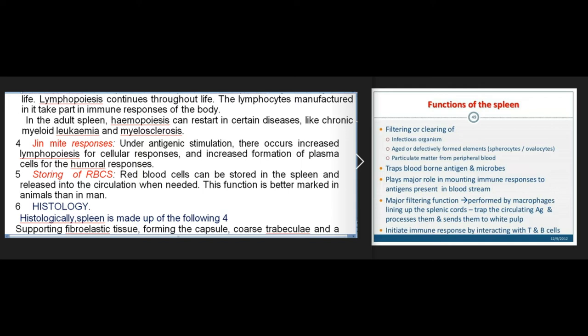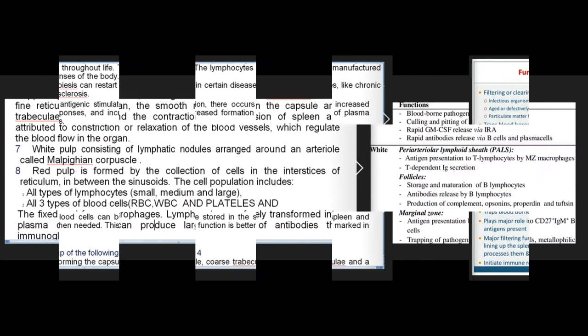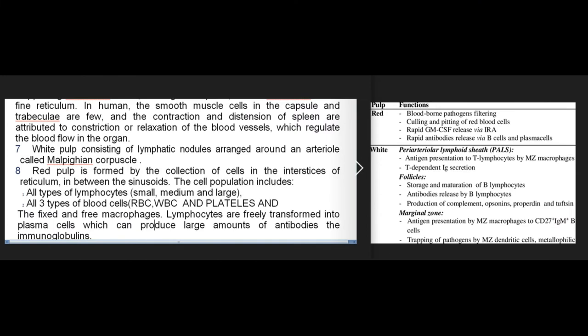In humans, smooth muscle cells in the capsule and trabeculae are few; contraction and distension of the spleen are attributed to constriction or relaxation of blood vessels regulating blood flow. 7. White pulp consists of lymphatic nodules arranged around an arteriole, called Malpighian corpuscles. 8. Red pulp is formed by cells in the interstices of the reticulum between the sinusoids, including all types of lymphocytes, all three types of blood cells (RBC, WBC, platelets), and fixed and free macrophages. Lymphocytes are transformed into plasma cells producing immunoglobulins.